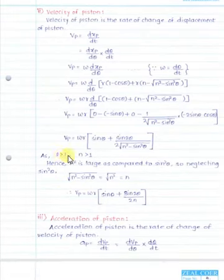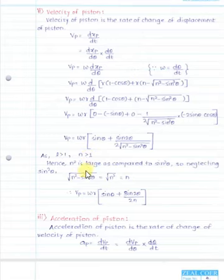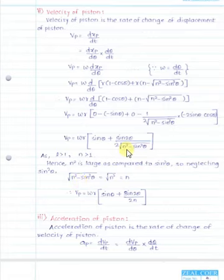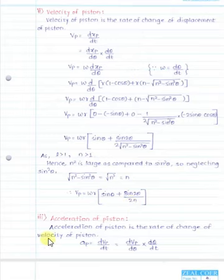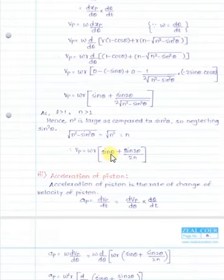With the approximation applied, the velocity of the piston simplifies to: vp = ω·r·[sin(theta) + sin(2theta)/(2n)]. The unit of velocity is meters per second, millimeters per second, or centimeters per second. Now we proceed to find the acceleration of the piston.